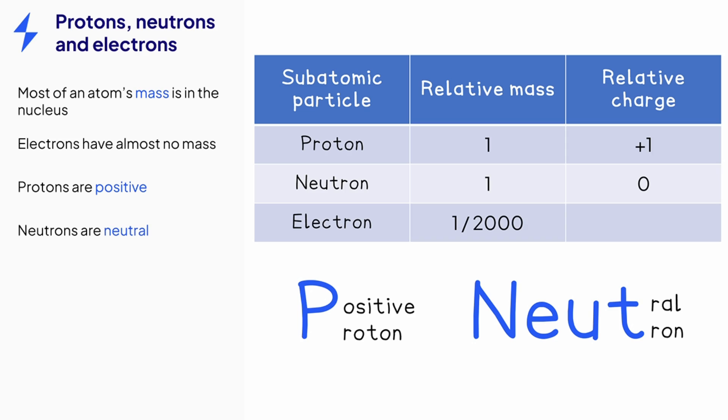Overall, atoms are not charged, which means that for every positive proton, there must be a negative electron. There is no trick for this one, you just need to remember that electrons are negative with a minus one charge.